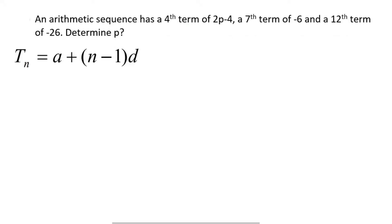Let's start with the first piece of information. They say that t4 has a value of 2p minus 4. So we can say 2p minus 4 equals a, which we don't know. That's term 4, so we say 4 minus 1 times d. So we're going to say 2p minus 4 equals a plus 3d.